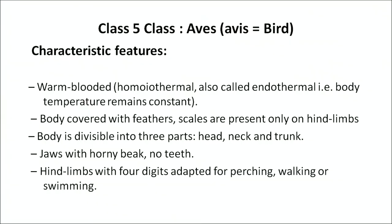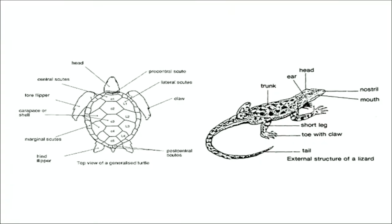The next class is Aves — derived from the word 'avis', meaning birds. Characteristic features: they are warm-blooded — homeothermal, also called endothermal — meaning their body temperature remains constant. Body is covered with feathers. Scales are present only on the hind limbs. The body is divisible into three parts: head, neck, and trunk.